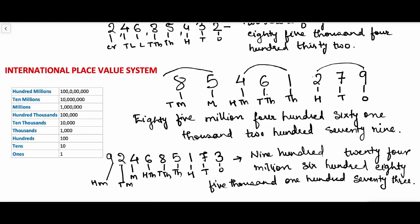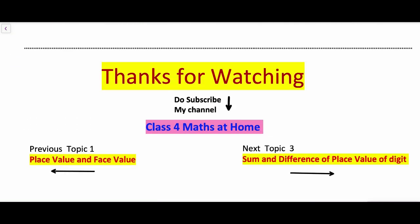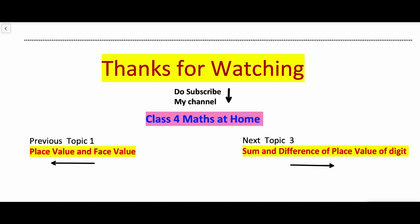In the Indian place value system we have ones period, thousands period, lakhs period, and crores period. This is how we can write the number name of a given number according to the Indian place value chart or the international place value chart. I hope the topic is clear to you. Thanks for watching — do subscribe to my channel Class for Maths at Home. If you want to watch other topics of the maths series for Class 4, please see my other videos. Thank you.